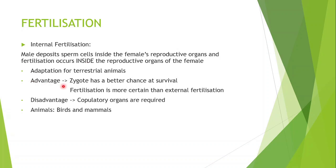An advantage of internal fertilization is that the zygote has a better chance of survival. A zygote is formed when a male gamete and a female gamete fuse. The resulting zygote has a better chance of survival because it is retained inside the mother's body — it's not exposed to predators, and it has a parent protecting it. Another advantage is that fertilization is more certain than external fertilization, because the male deposits sperm cells inside the female's reproductive organs, rather than the sperm being deposited over eggs in the environment.